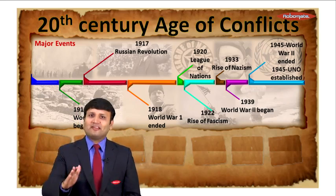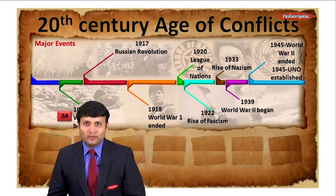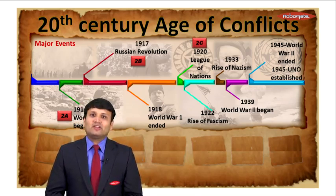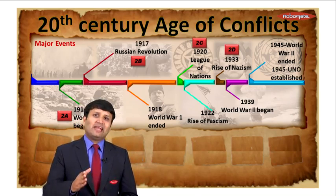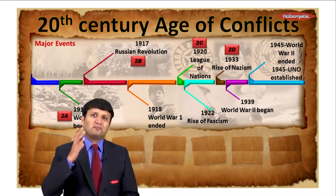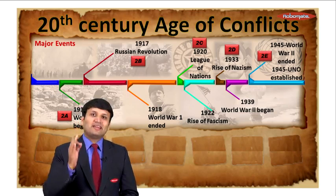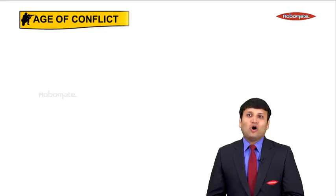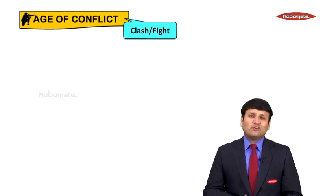This timeline represents the chapters of Unit 2: 2A talks about World War 1, 2B talks about the Russian Revolution, 2C talks about the League of Nations, 2D talks about the rise of dictatorship in Europe where we learn about Nazism, Fascism and other features, and finally 2E talks about the United Nations Organization. So let's start with our first chapter — World War 1, that is 2A.